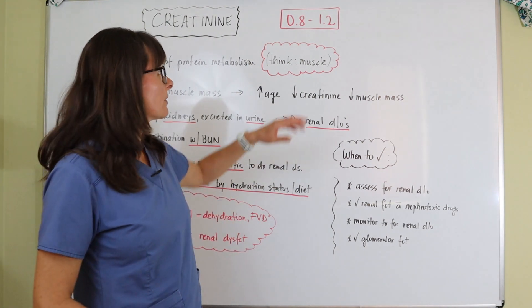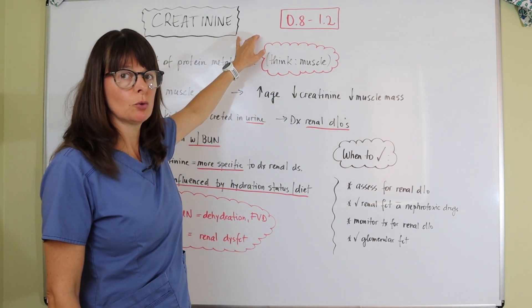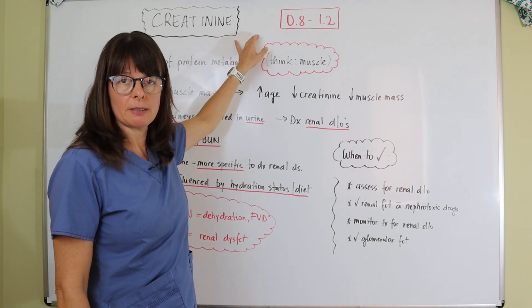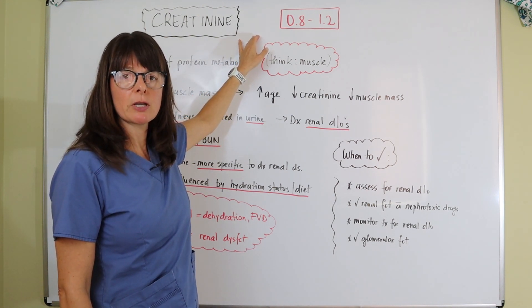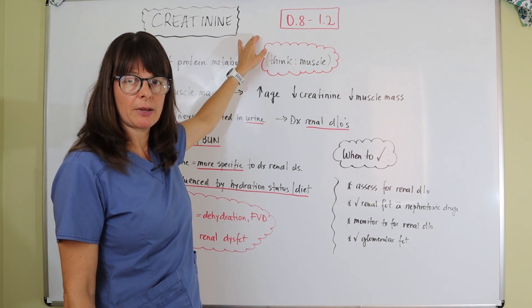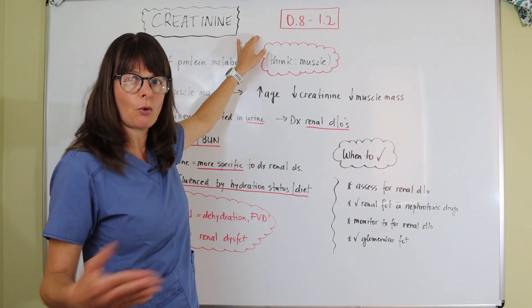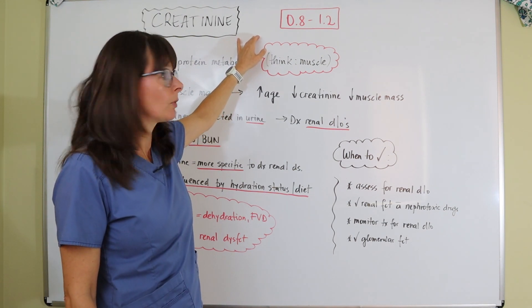First of all, I've written down a reference range here from 0.8 to 1.2, but always remember that it depends on whatever lab you're working with. Make sure you check the reference range for the specific lab so that you know if your patient's value is in or outside the normal range.